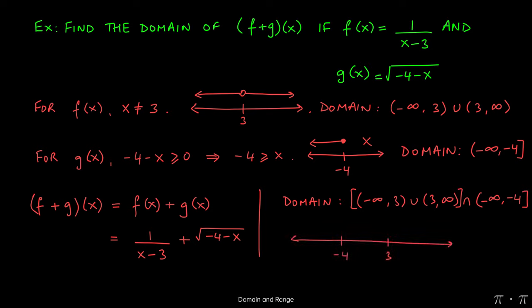Easiest way to visualize this is to draw a number line with negative 4 and 3 on it, open circle at 3 because we have to disregard or exclude 3 from our original discussion, and we have an arrow going in both directions.